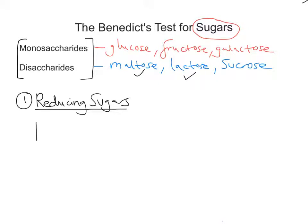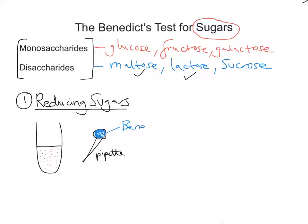To test for reducing sugars, we take a sample in a test tube and add Benedict's reagent, which is blue, using a pipette. It's always good practice to use an excess of Benedict's, because that ensures all of the sugar will react in the process. So we've got our unknown solution and we add Benedict's reagent to it.